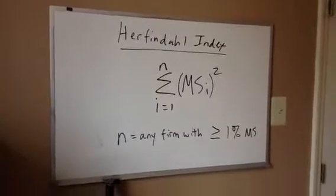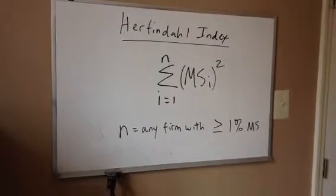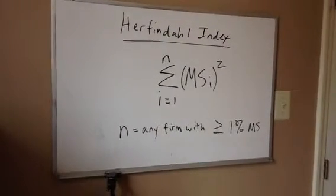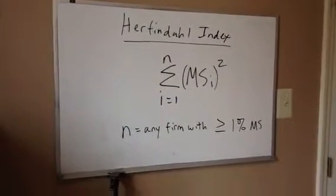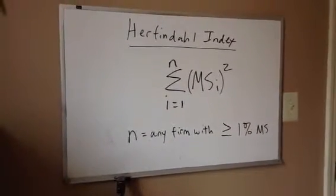In home building, for example, there are 35,000 companies, only 12 of which meet this threshold of 1% or more. You could figure out the Herfindahl of an industry with 35,000 firms with just the information from those 12 firms.